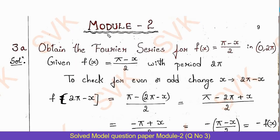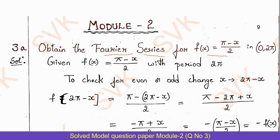Here is the solution for Module 2. Question number 3a: obtain the Fourier series for the function f(x) = (π - x)/2 in the interval 0 to 2π. The given problem is of period 2π. The period is confirmed as end interval minus starting interval: 2π - 0 = 2π.